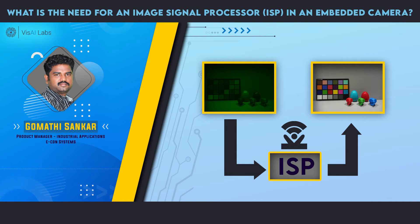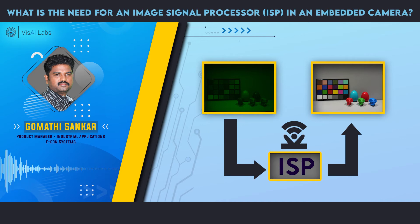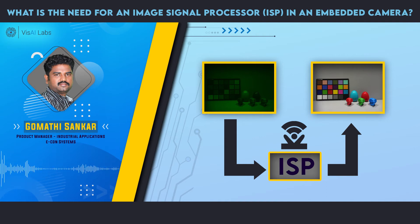The image on the left is what you get usually from the sensor. With a fine-tuned ISP, you will get something on the right. If it is not fine-tuned well enough for your sensor, you may not get very good image quality regardless of what sensor you are going to use.